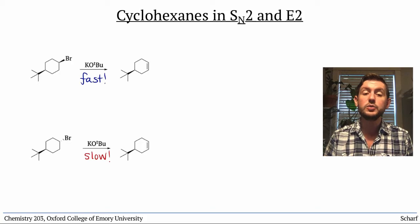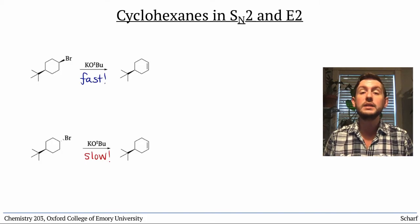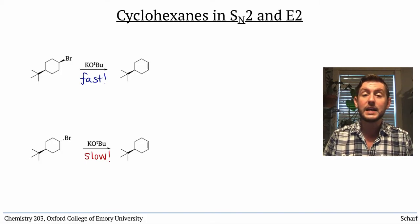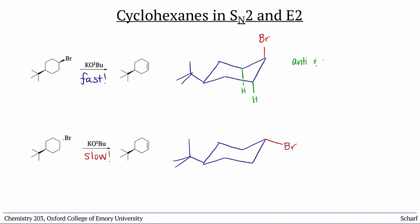This has to do with the spatial requirement of the E2 elimination, that the H being deprotonated and the leaving group must be anti- and periplanar. When the bromine is axial, there are hydrogens next door that are both in the required orientation.